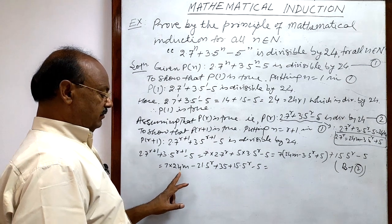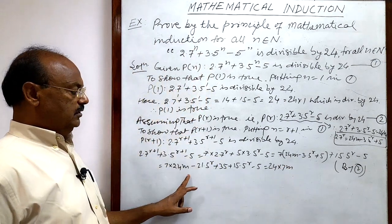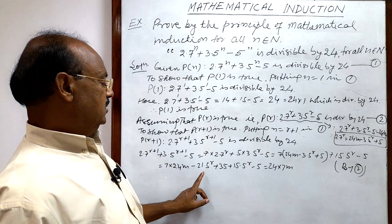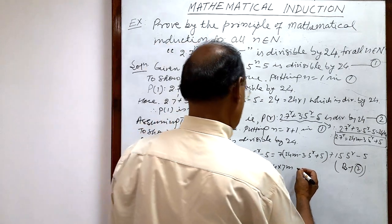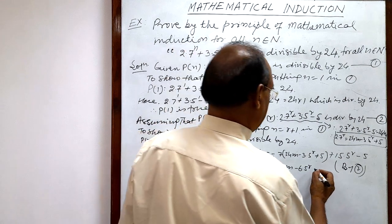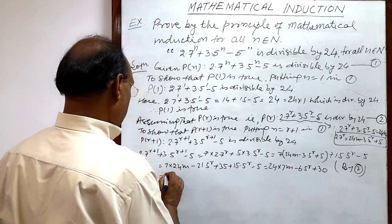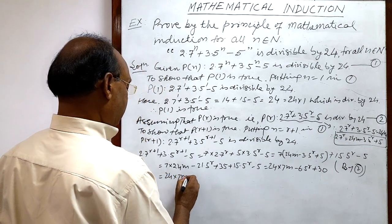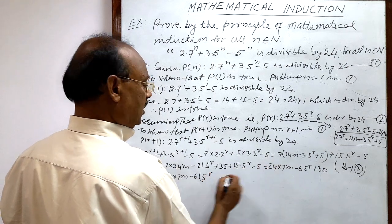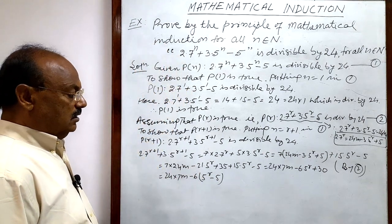Simplifying: 24 is a factor in the first term, giving 24·7m. For the 5ʳ terms: -21·5ʳ + 15·5ʳ = -6·5ʳ. And 35 - 5 = 30. So the expression becomes 24·7m - 6·5ʳ + 30, which equals 24·7m - 6·(5ʳ - 5). We can take 6 common to get 24·7m - 6·(5ʳ - 5).